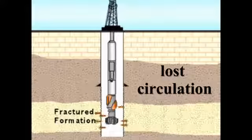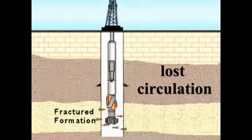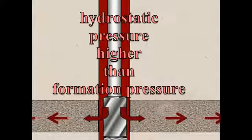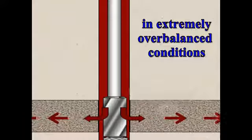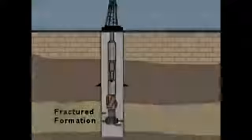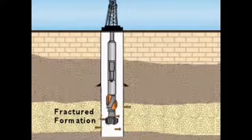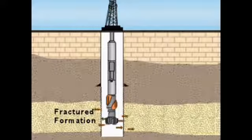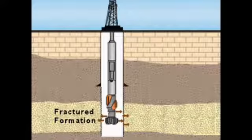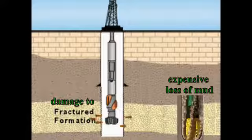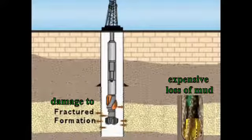Lost circulation is another serious problem. It is the result of hydrostatic pressure being higher than the formation pressure in an extremely overbalanced condition. The mud weight fractures the formation rock creating large channels causing the mud to flow rapidly out of the wellbore into the rock. This results in an expensive loss of mud and can damage the formation.